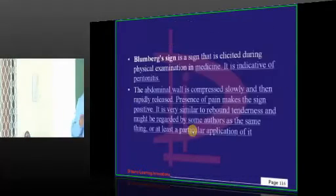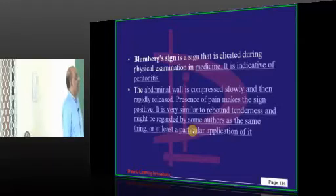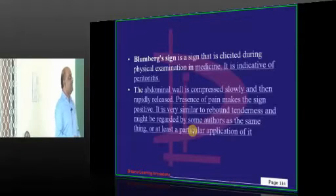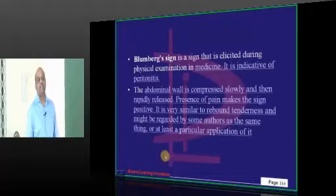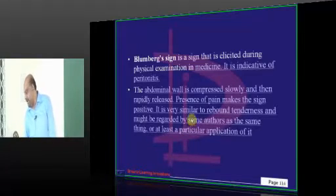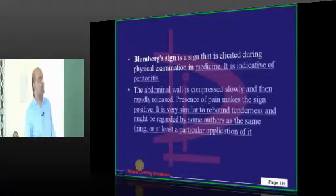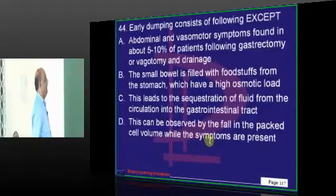That is right. Blumberg's sign is elicited as indicative of peritonitis, where you find rebound tenderness — not board-like rigidity.